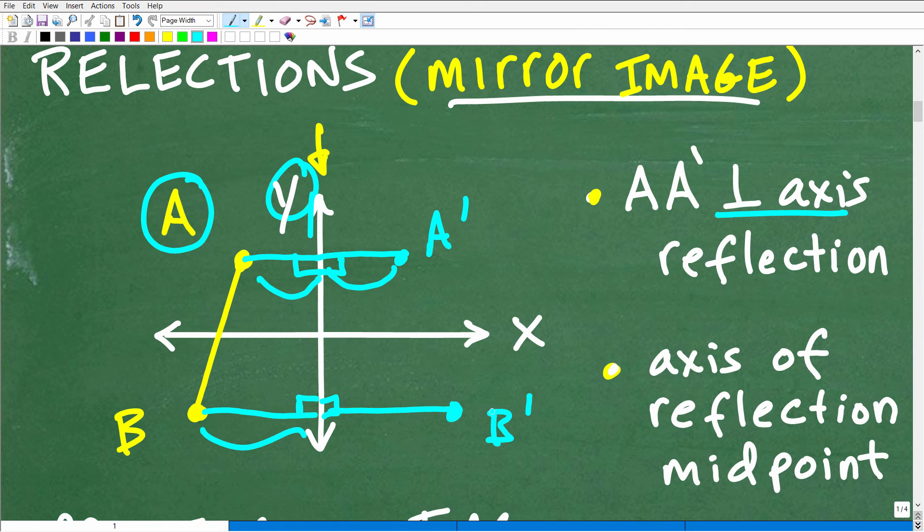You just plot these various points, these vertices of your pre-image to your image, and then you just connect the dots, and there you go.